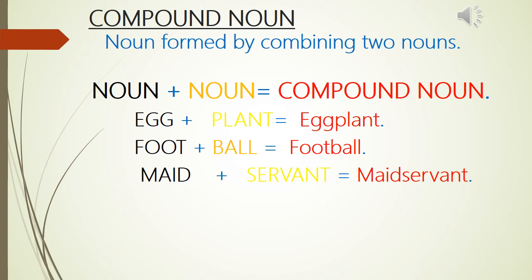The last topic of today's lecture is compound noun. Compound nouns are formed by combining two nouns. The formula is: noun plus noun equals compound noun. For example: egg + plant = eggplant; foot + ball = football — both 'foot' and 'ball' are nouns, and combining them creates the compound noun 'football.'